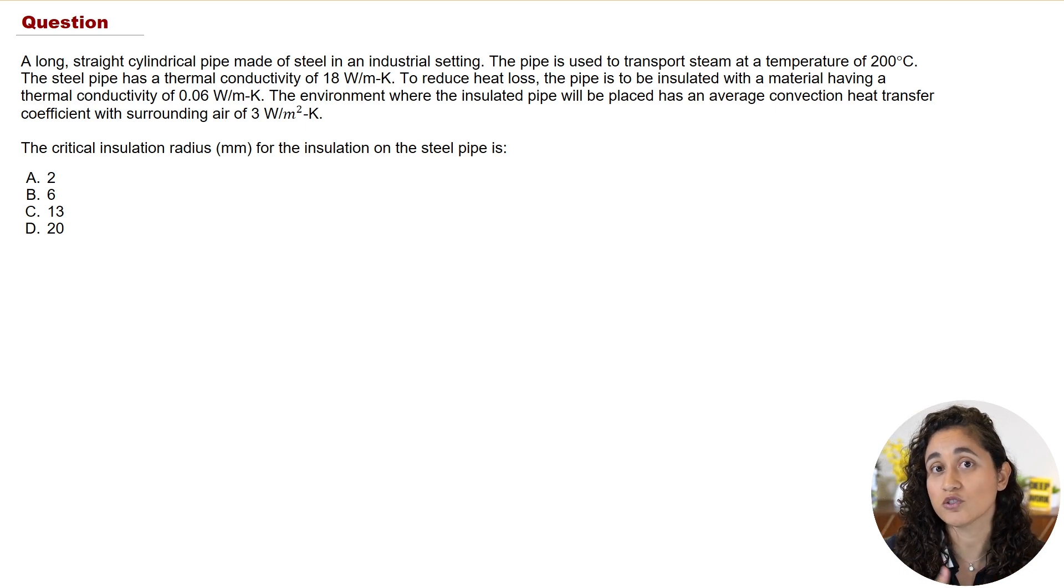Now if we add too little insulation, the heat loss or reducing heat loss won't be maximized. So at the critical insulation radius, we get the best balance, and then the rate of heat loss is being maximized.